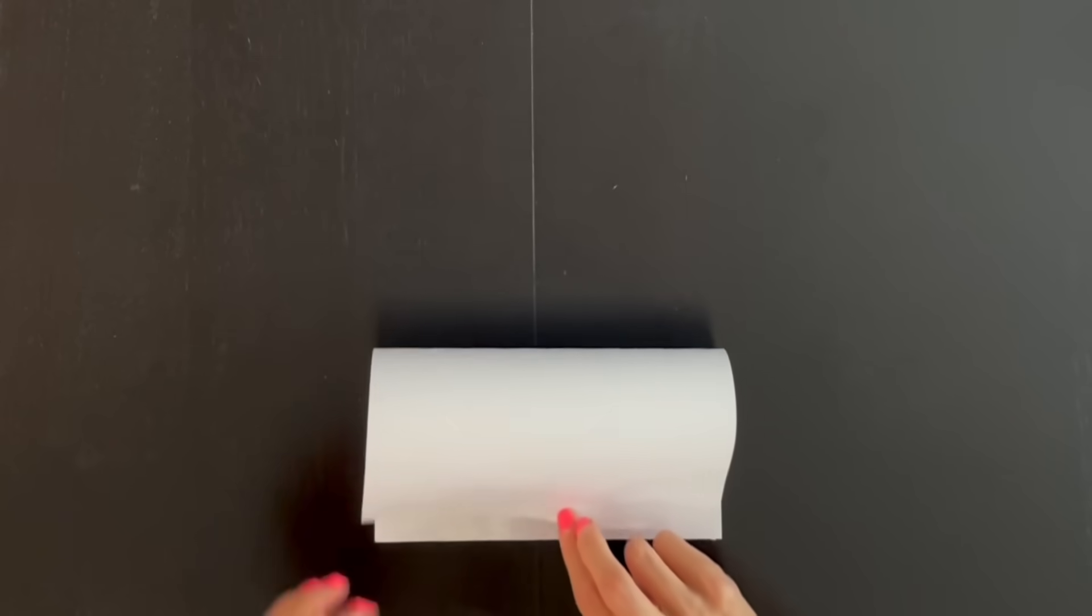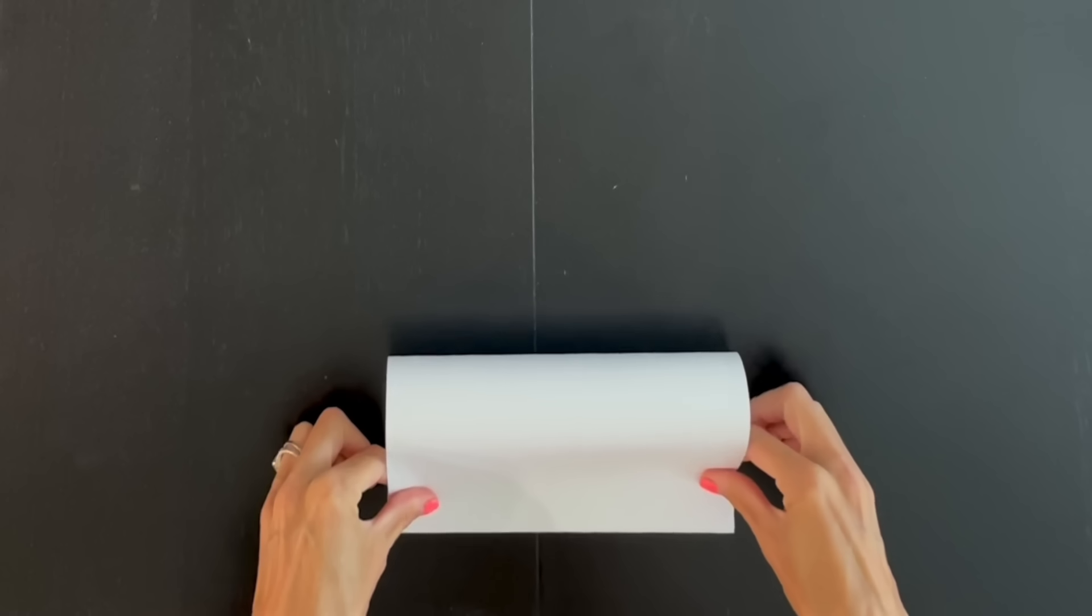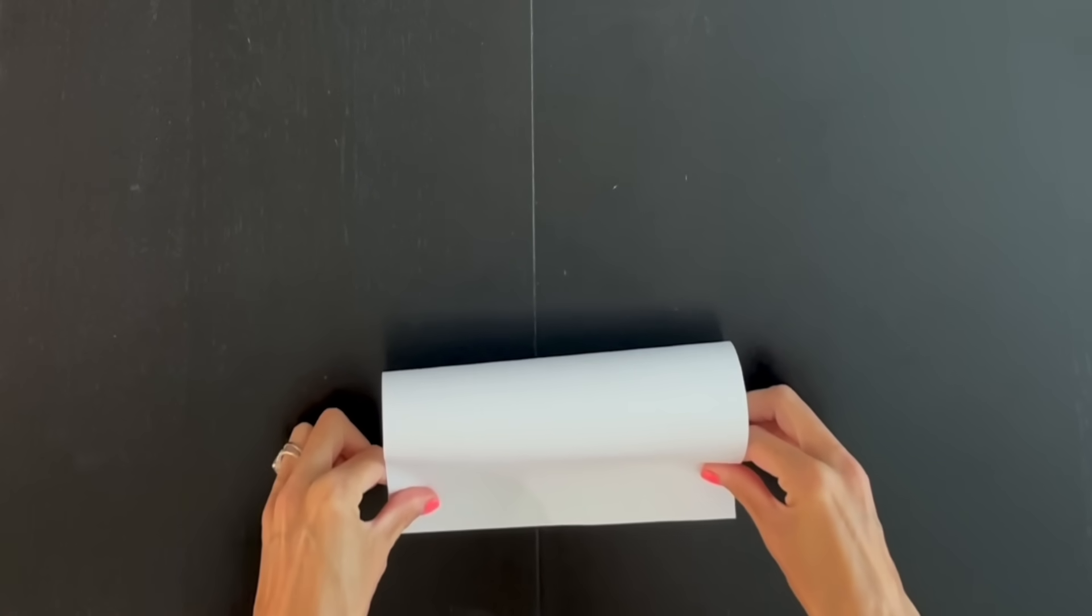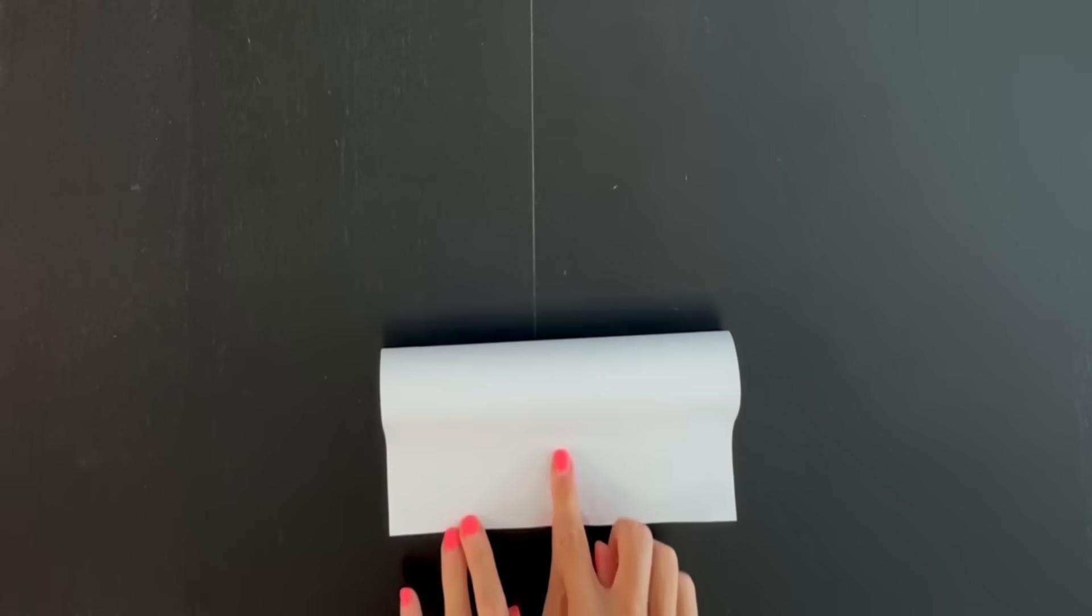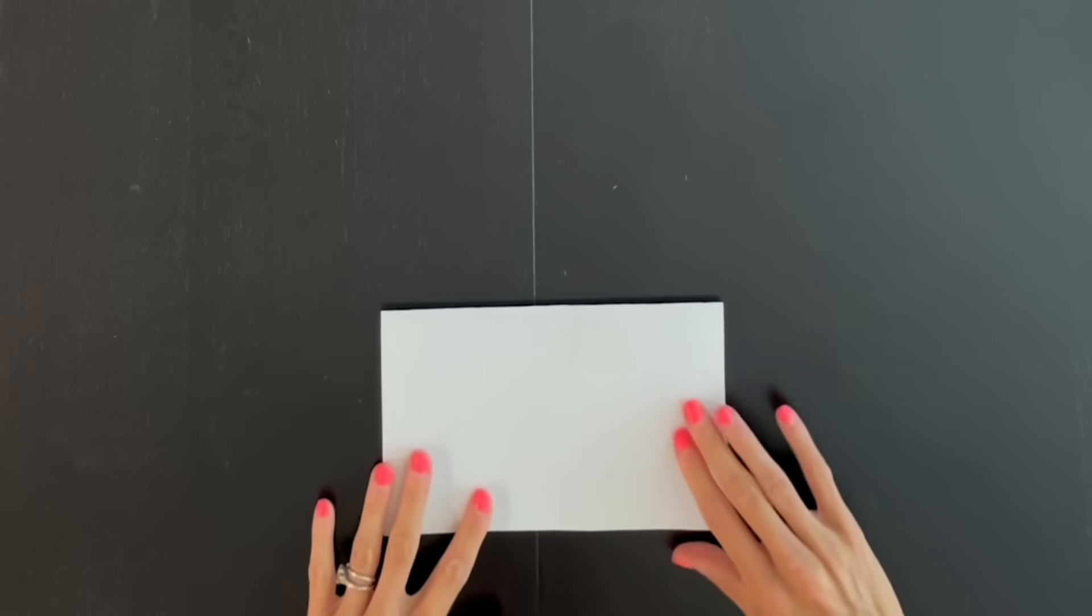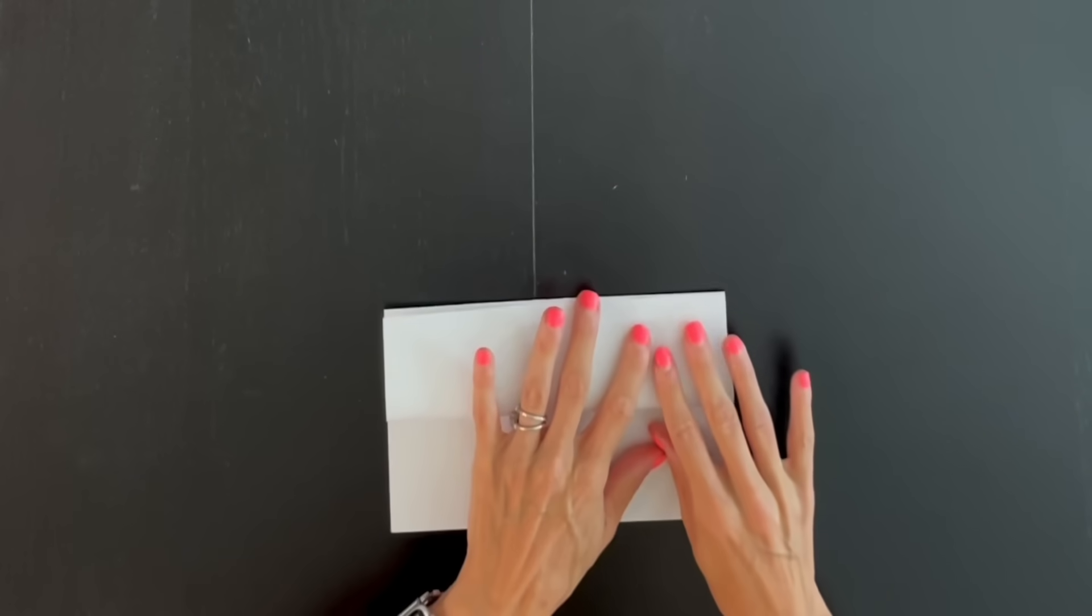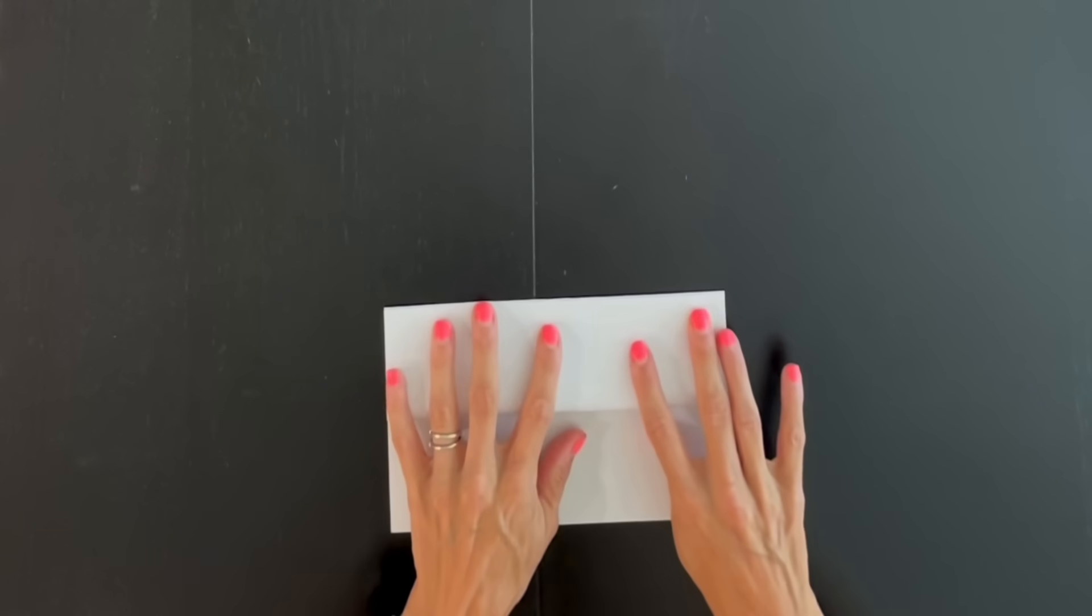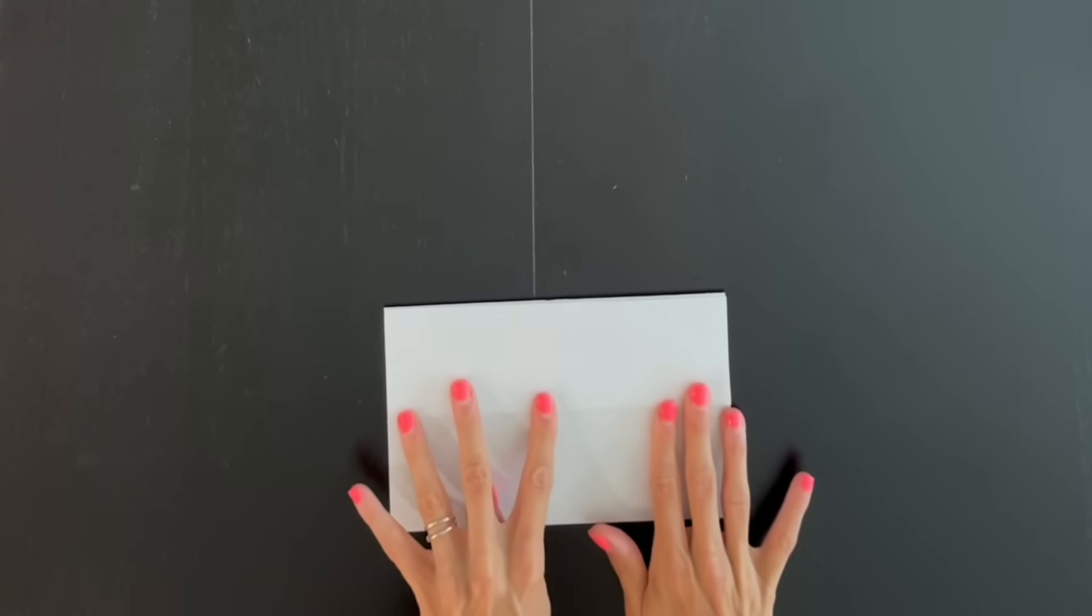Let's get started by folding our paper in half. Be sure to line up those corners as best you can. Start in the middle and smooth it out. Now take just the top part, fold it up, lining up those corners, starting in the middle and smoothing it out.